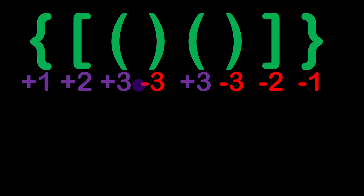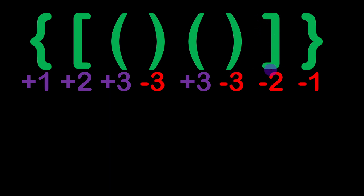For the string provided in the example, we have +1 from the first character, then +2, then +3, and then for the first closing parentheses we have -3. Then we have another opening parentheses: +3, then -3 for the closing, -2 for the closing bracket, and -1 for the closing braces. This is how the indexing works for the algorithm.